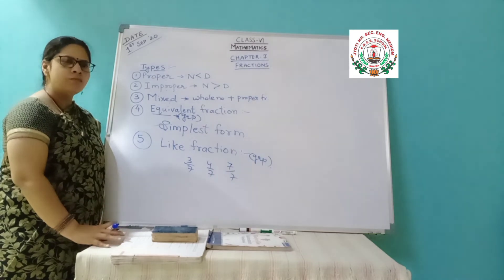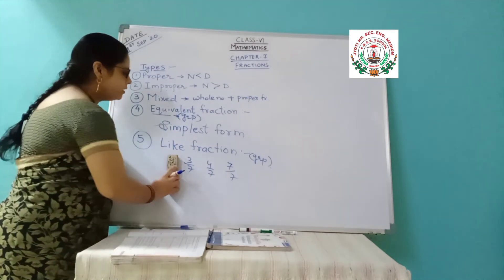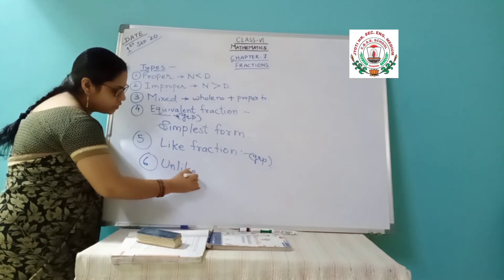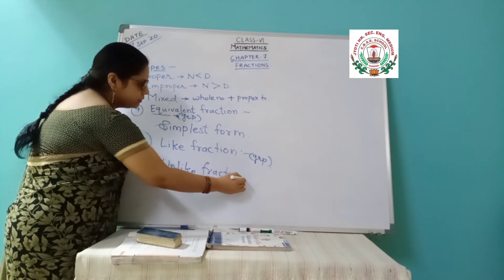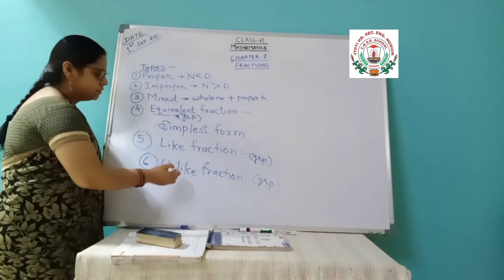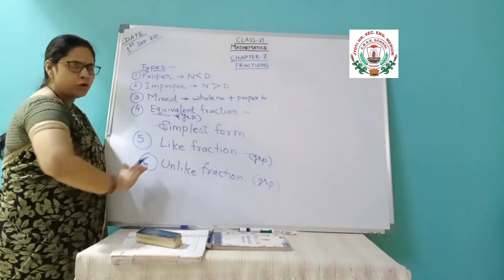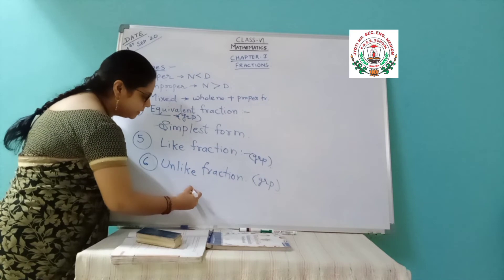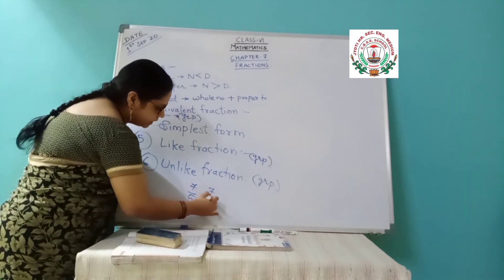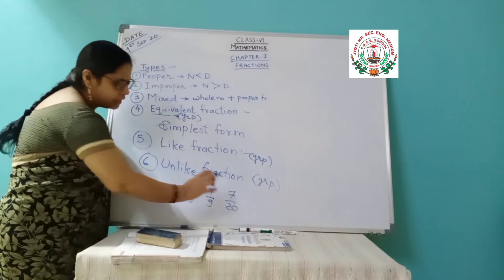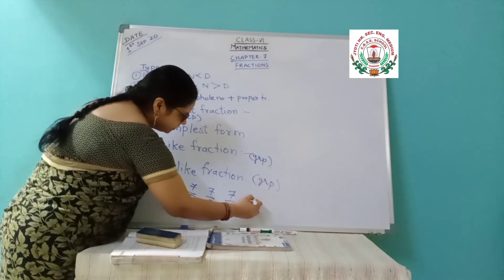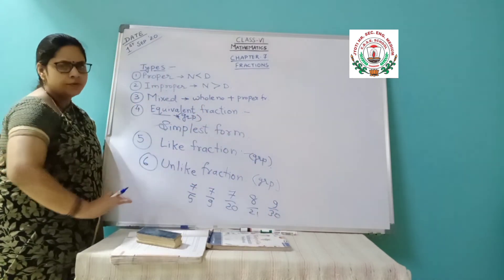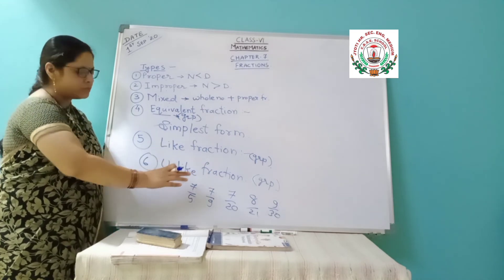Then the opposite of like is unlike. So the next topic is unlike fractions — the opposite of like fractions. Here also you take a group of fractions, but here the denominators will be different — whether the numerators are same or different, whatever it may be. Like suppose 7 by 5, 7 by 9, or 7 by 20 — denominators are different. Or 8 by 21, 9 by 30 — denominators are different. So this group means all the fractions are unlike fractions.